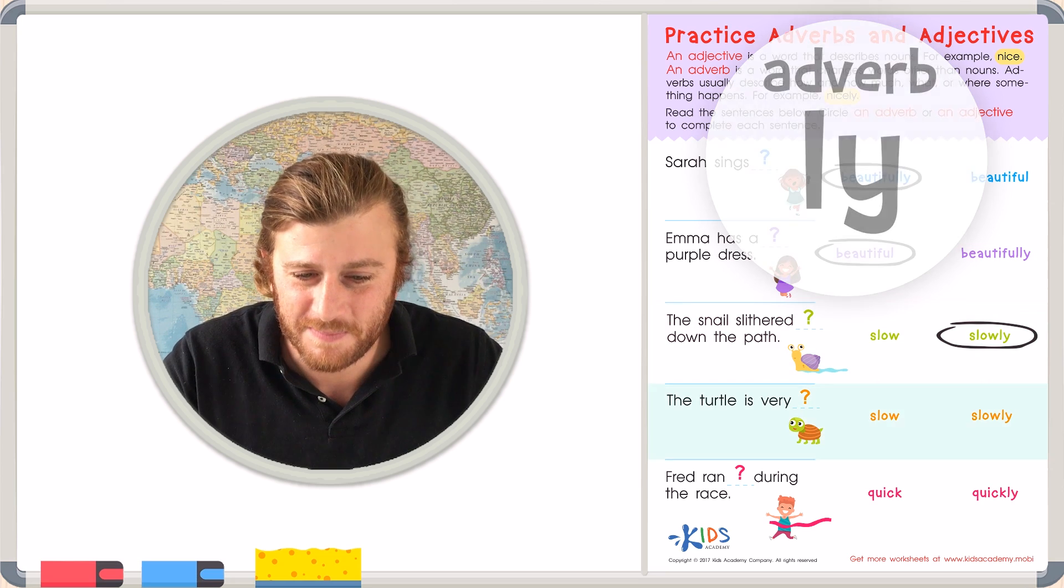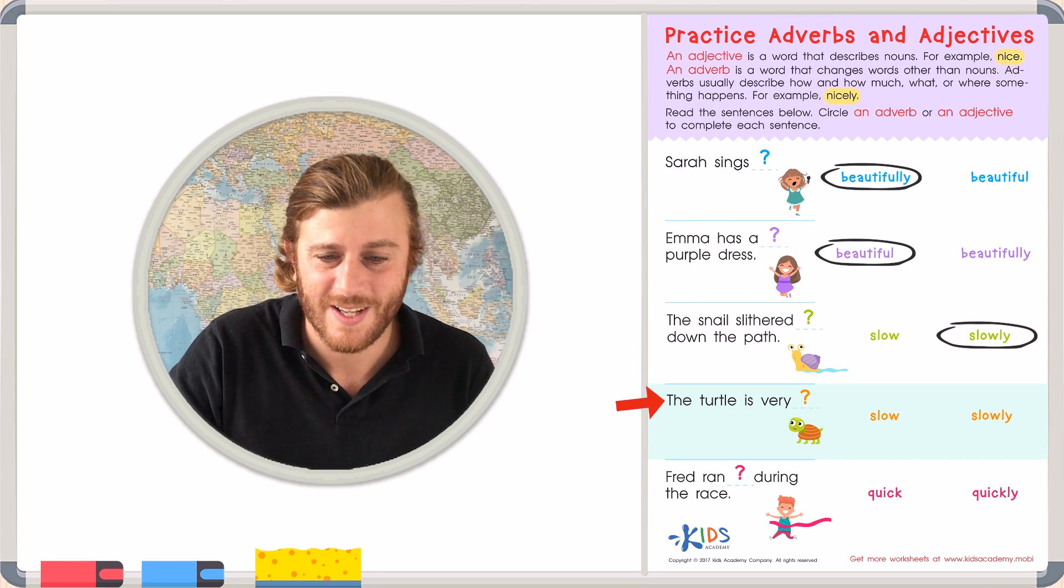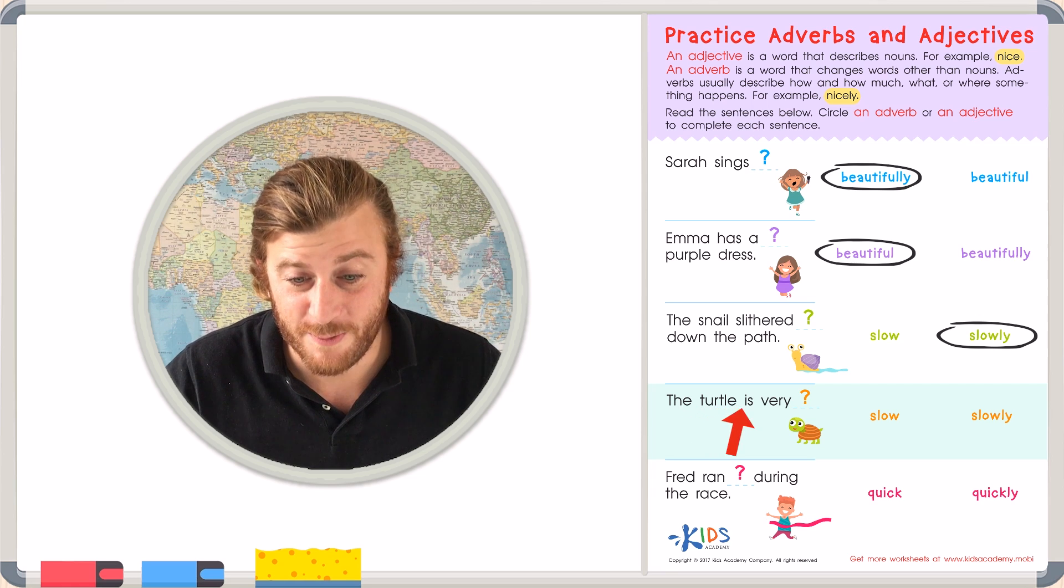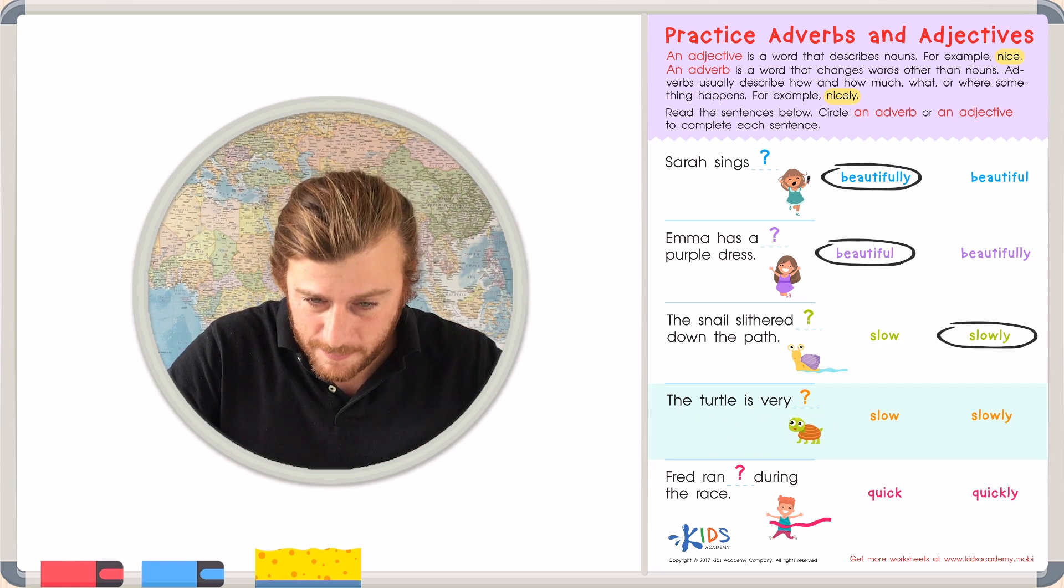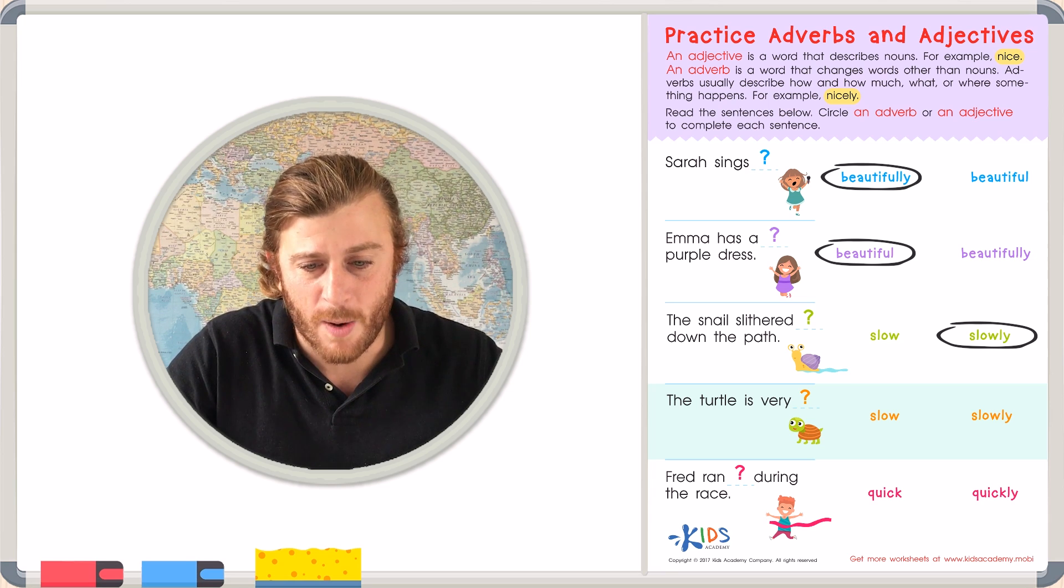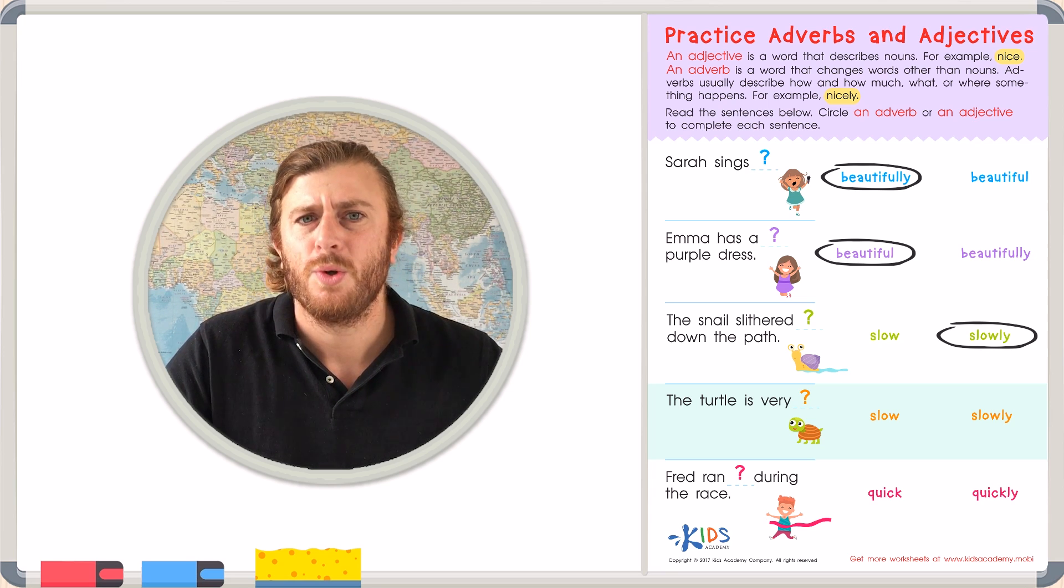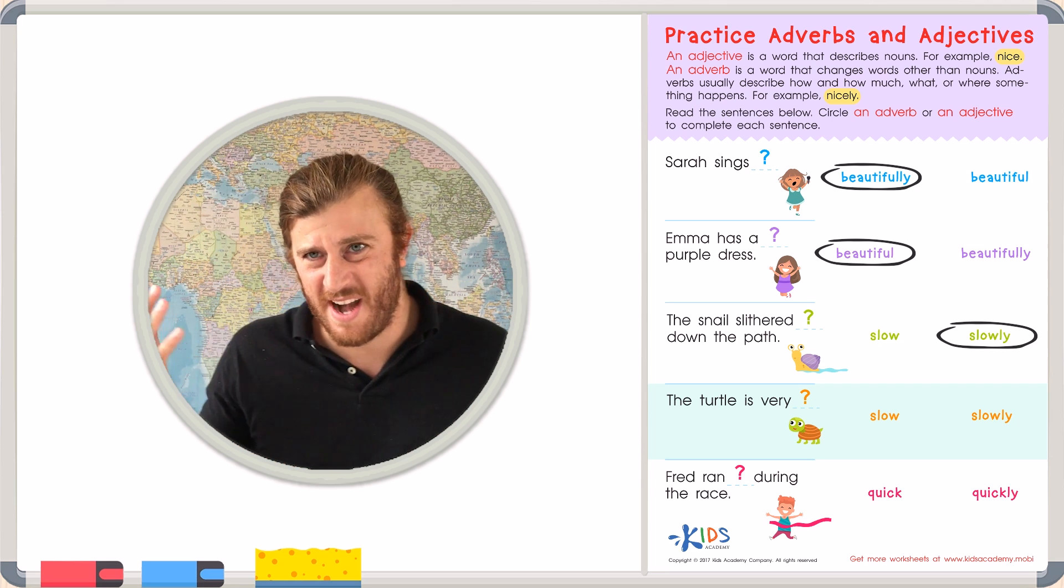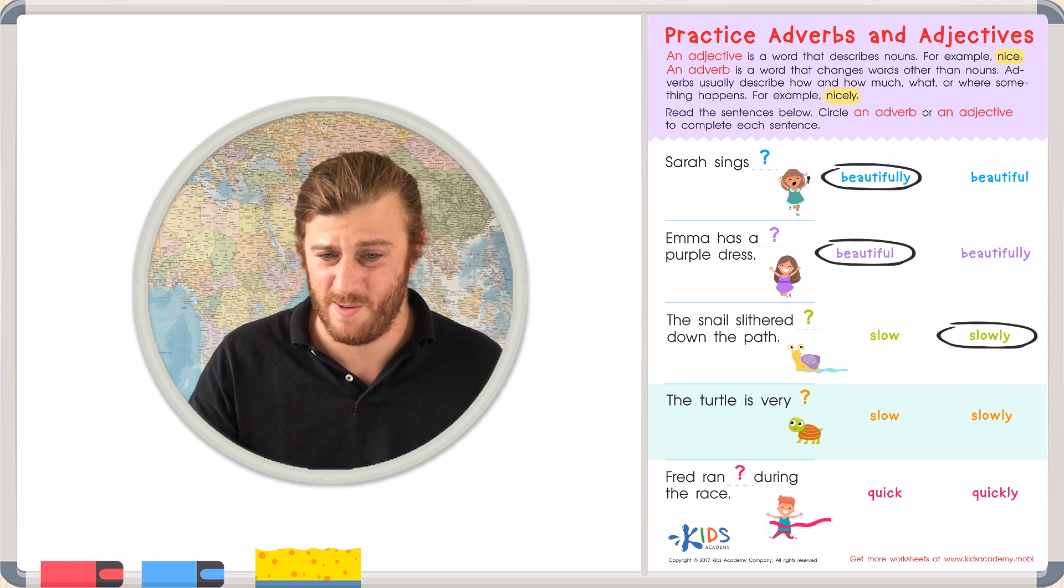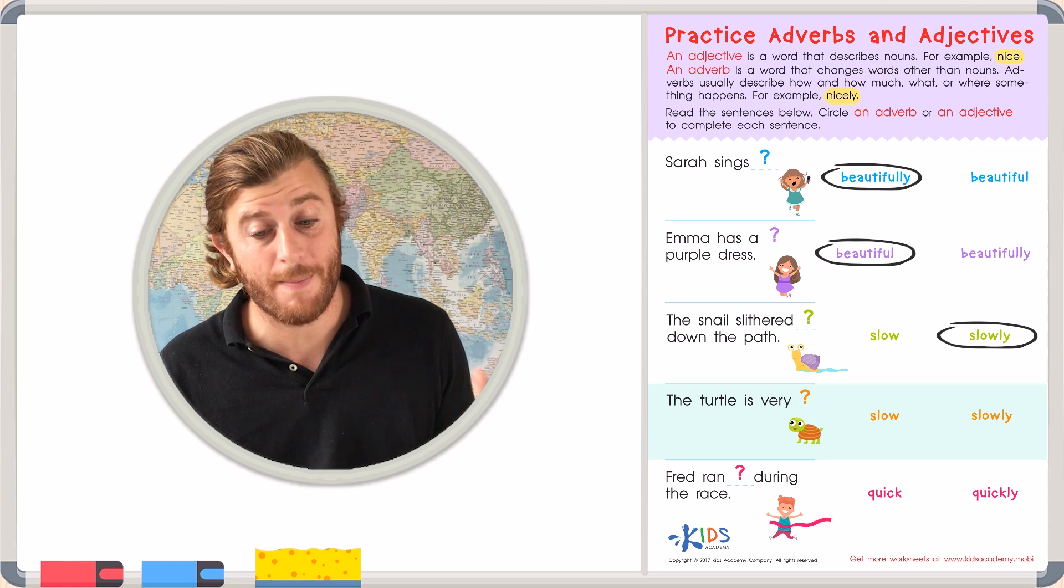Let's look at number three. I see a turtle. The turtle is very blank. Now, in this case, the blank, it's describing the noun or the subject of the turtle. So, do we need an adjective to describe the noun? Or an adverb to describe the verb? In this case, we're going to need an adjective to describe the turtle.